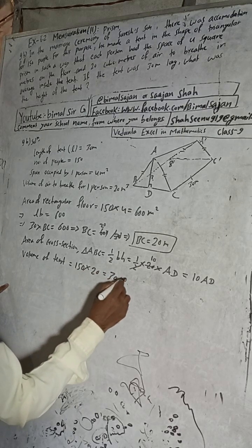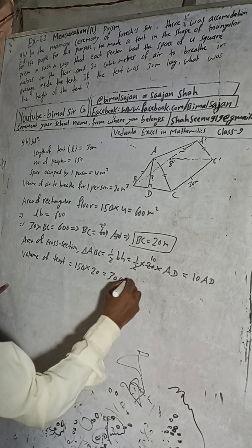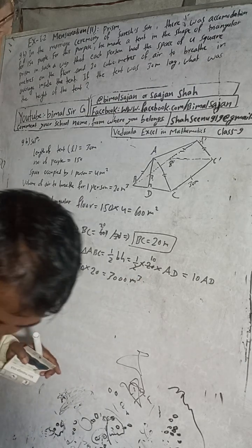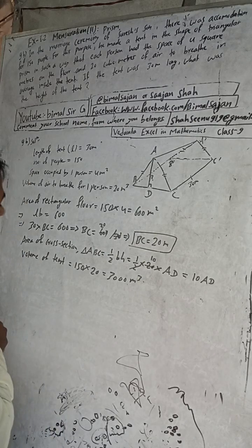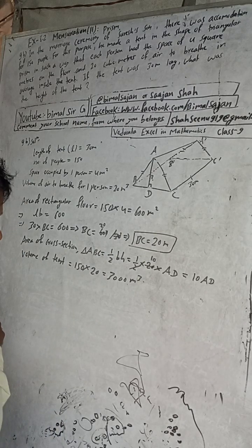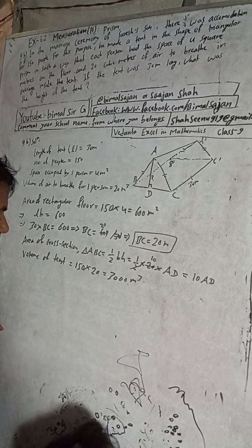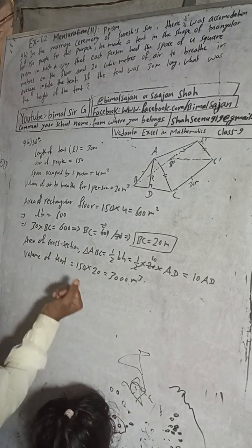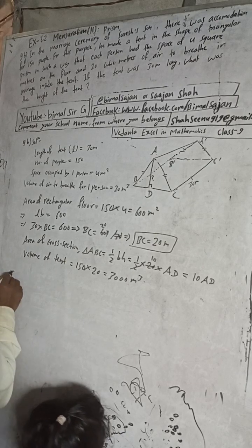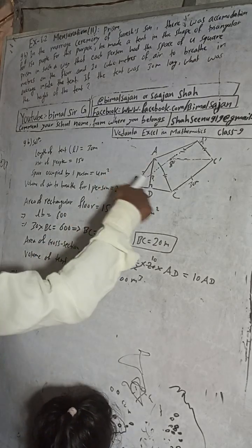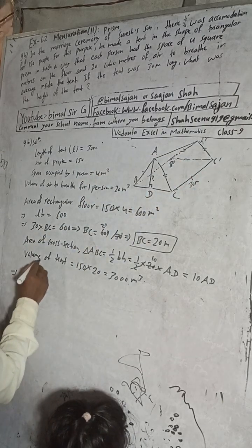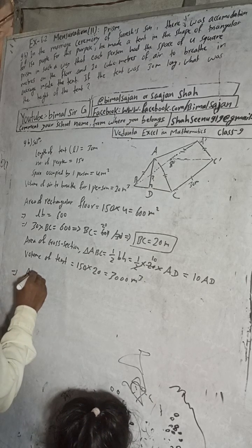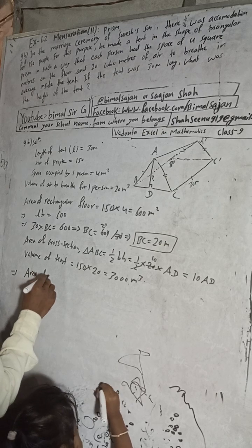We know that there are total 150 people and one people need how much air? Volume of air for one person to breathe is 20 cubic meters. So one person 20 meters cube, then total air will be how much? 150 people into 20. This is 3000 cubic meters.